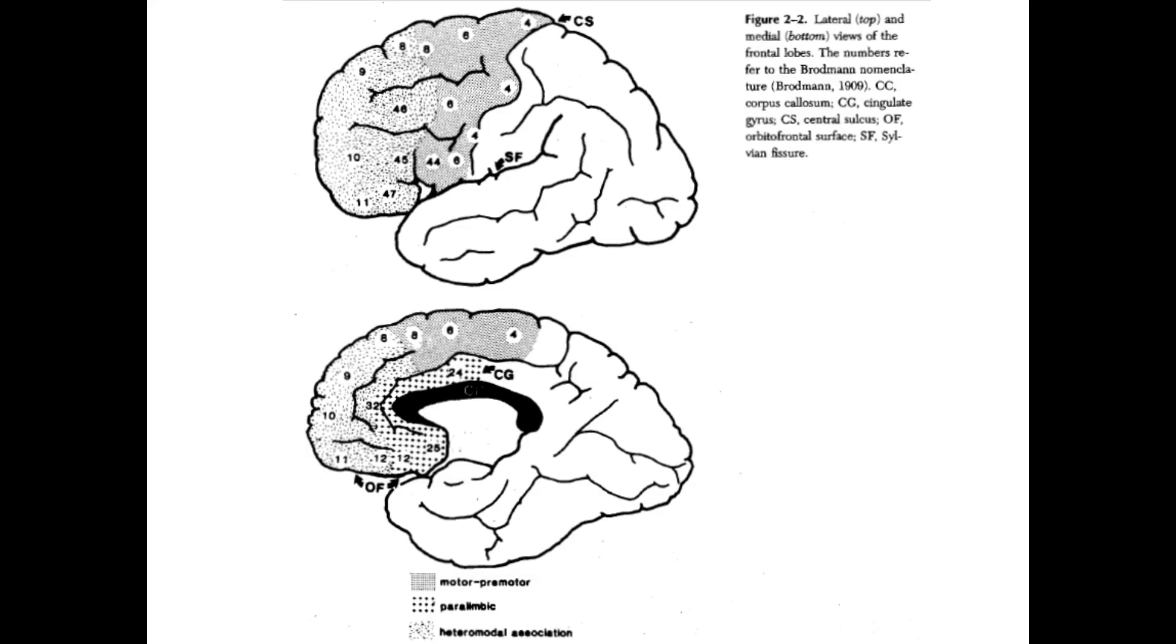Right here, you have this from the text, this image, but it's depicting the same, they are trying to show the lateral and medial views of the frontal lobes, and you see the numbers refer to the Brodmann areas, the ones I showed you before in colors.